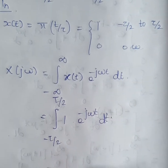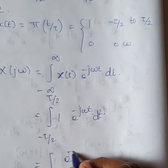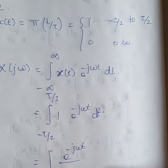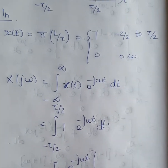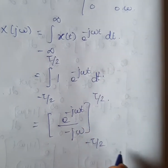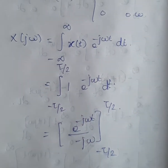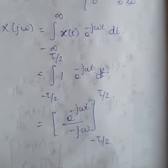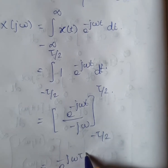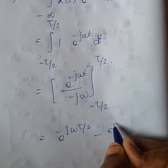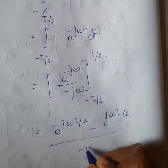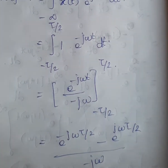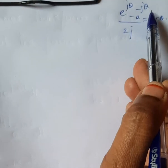Integrating, we get: e^(-jωt) / (-jω) evaluated from -τ/2 to +τ/2. Applying the limits gives: [e^(-jωτ/2) - e^(jωτ/2)] / (-jω).